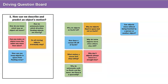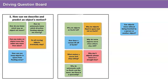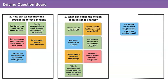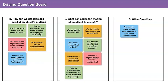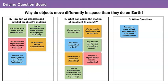Maybe your question is about why the motion of objects does not always stay the same. If so, you can add it to category two: what can cause the motion of an object to change? Questions like what makes a soccer ball stop rolling belong in this category. We still have one last question that doesn't fit into the other two groups, so let's put it in its own group — we'll call this category other questions for now. Do you notice that all of our questions are about how objects move in space and on earth? If we can answer all of these questions, they will help us answer one big question: why do objects move differently in space than they do on earth?